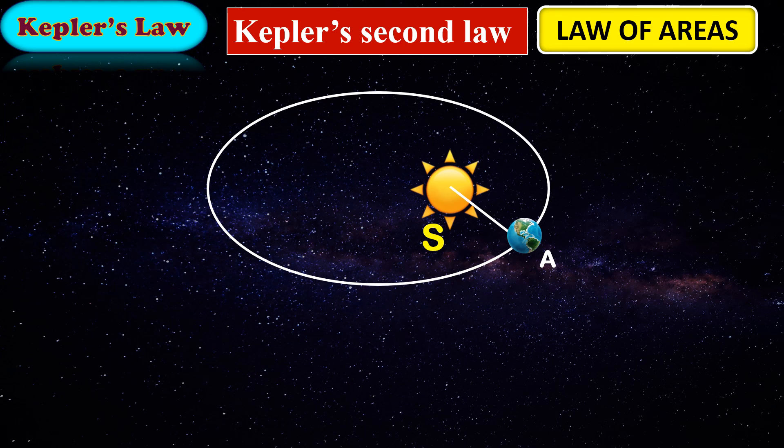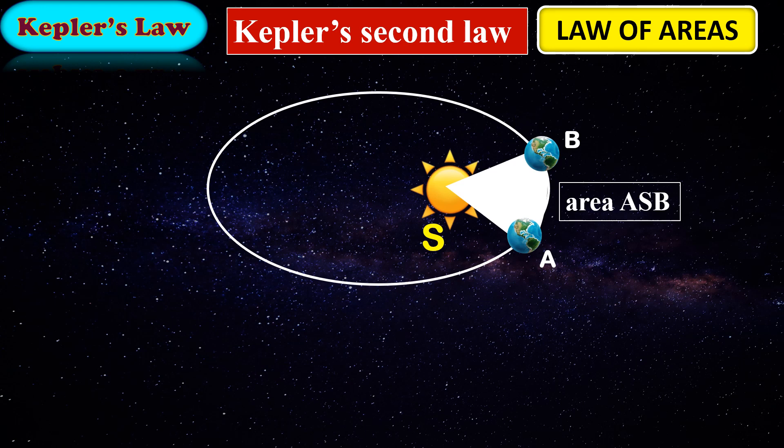Let's assume that Earth from position A sweeps to position B in one month. So, here the area covered will be A-S-B.